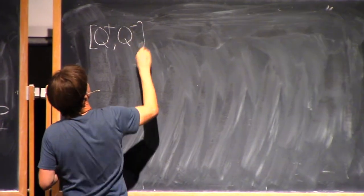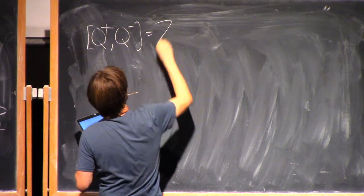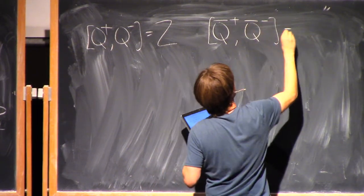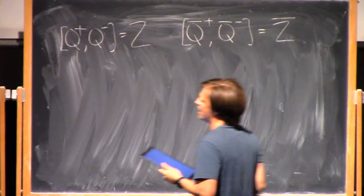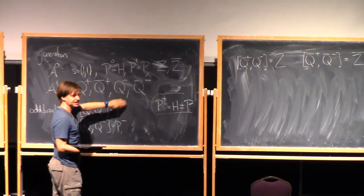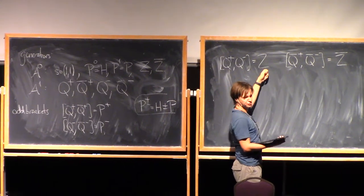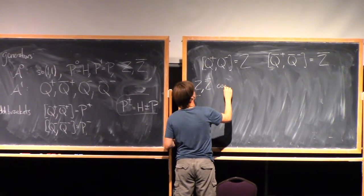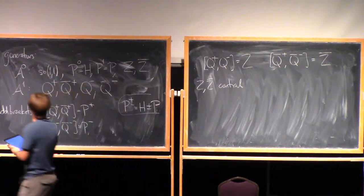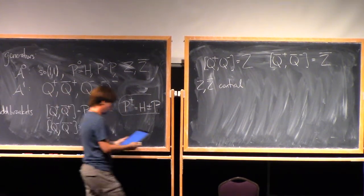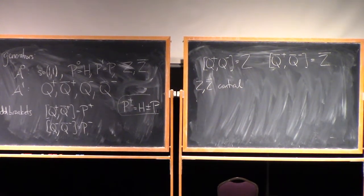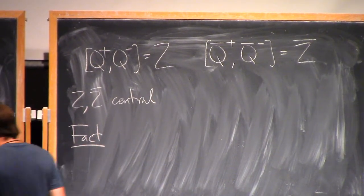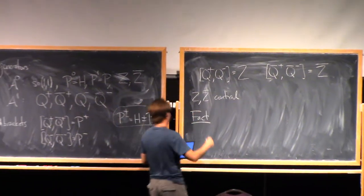The bracket of Q-plus with Q-minus is Z, and the bracket of Q-bar-plus with Q-bar-minus is Z-bar. The bracket of some odd generators gives translations; the bracket of other odd generators gives these new elements Z and Z-bar. And Z and Z-bar are central — they commute with everybody. So this is the basic fact about the representation theory of this algebra, by analogy with the non-supersymmetric case.